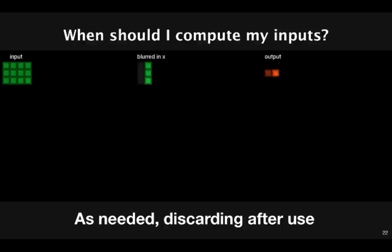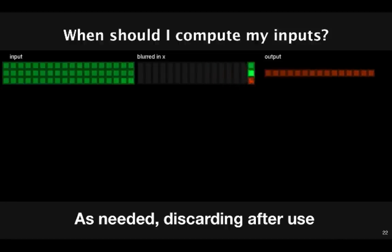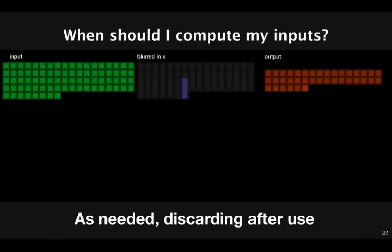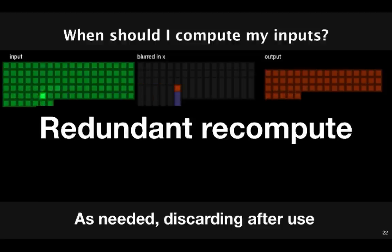So let's look at a different option. Here we compute three values of blur in x by reading nine values from the input, and we immediately use that to compute one value of the output. So here we get maximum locality. We're using data as soon as it's available without giving it any time to be evicted from a cache. What's the pitfall here? Well, if you look carefully at what the blur in x stage is doing, you'll realize that we're doing a lot of wasted work. Each point in blur in x is redundantly recomputed three times.